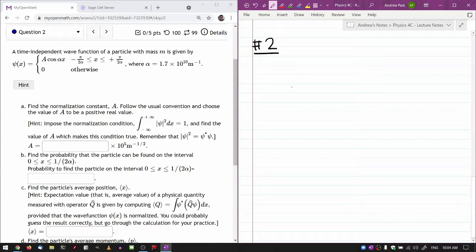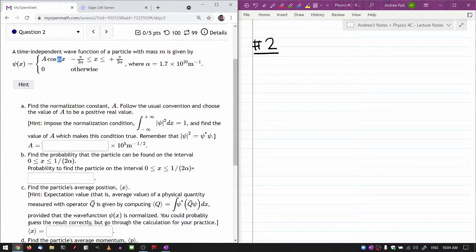It says time independent wave function of a particle with mass m is given by that. The way the alpha is positioned, I think it's defined so that you get something that looks kind of like a standing wave over a limited region of space and zero outside of the limited region.